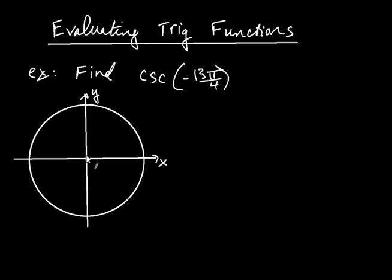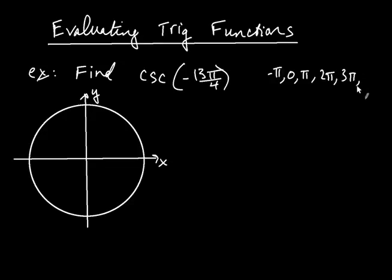Rotating in the clockwise direction, we have to rotate 13π over 4 radians — that's kind of a hard angle to think about. So what we're going to do is think in terms of integer multiples of π, like negative π, 0, π, 2π, 3π, 4π. I want to ask myself: how close is this angle to an integer multiple of π? For the moment, I'm going to disregard the negative and just focus on 13π over 4.